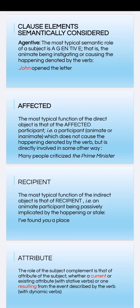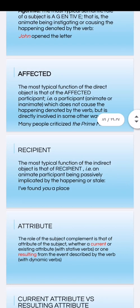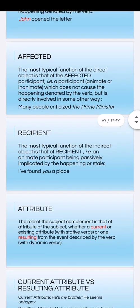For example: 'Many people criticized the Prime Minister' — so the Prime Minister is the affected one. Another semantic role is the recipient. For example, the indirect object — as in 'I have found you a place' — 'you' is the recipient.